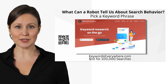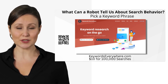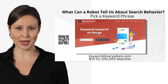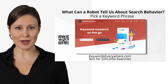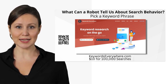Tool 1 is Keywords Everywhere. This is a Chrome extension. Go to the Google add-ons and download it to your browser. Follow the instructions on how to pay the $10 and activate the account with the activation key. It's simple.